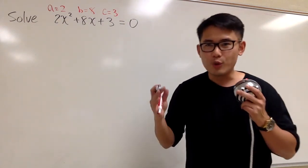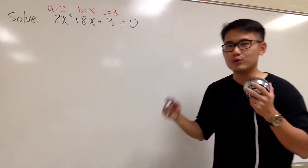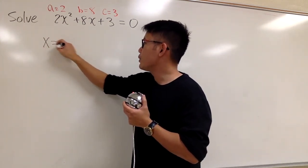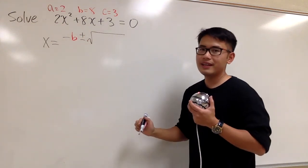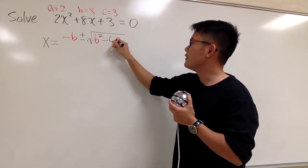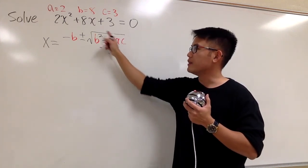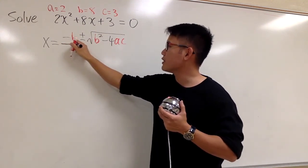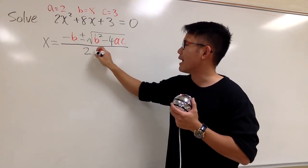In order for us to use the quadratic formula, of course, we have to know what the quadratic formula is, and we want to remember it really, really well. So it says x is equal to negative b plus or minus square root, and then inside we have b squared minus 4ac. All of this is inside the square root and on the top of the fraction over 2 times a.